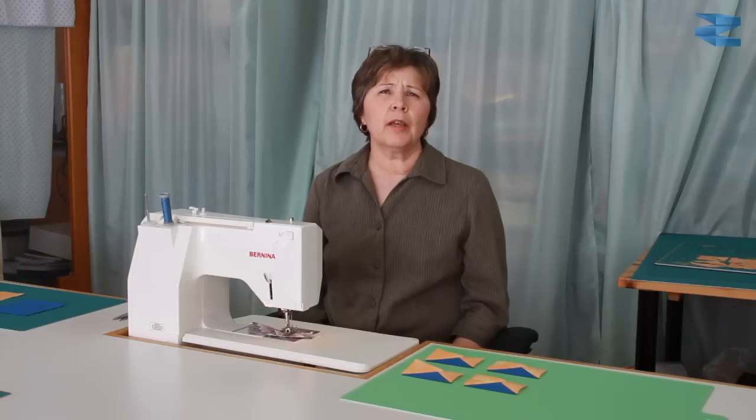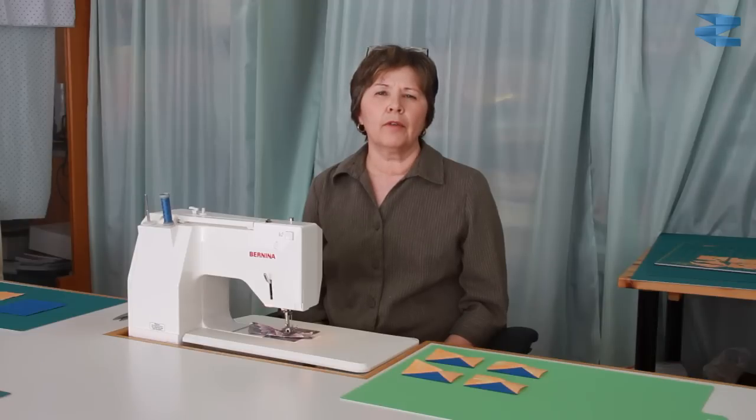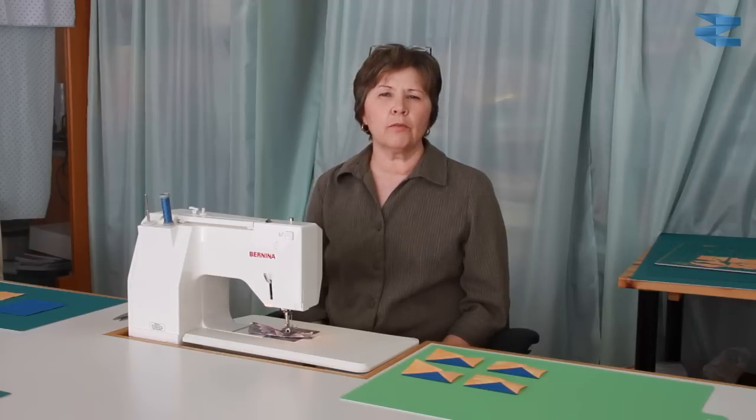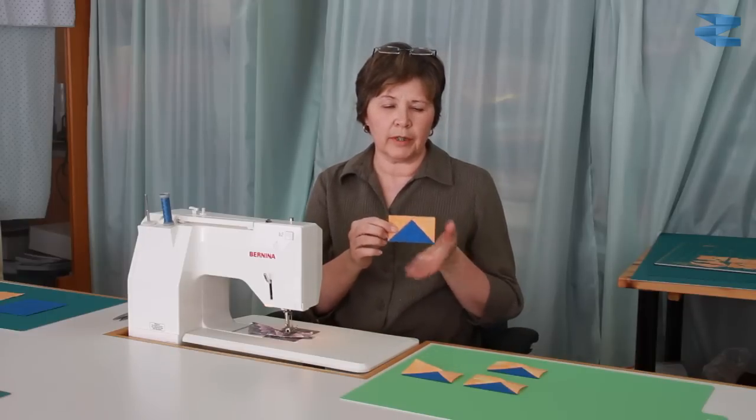When you piece your flying geese, do you get perfect rectangles? If your flying geese are askew like mine used to be, my trim down method that I'm going to show you will help you accurately piece 4 flying geese that have a finished width that is twice the finished height. For example, the flying geese I'm making are finished 3 inches wide by 1.5 inches high with quarter inch seam allowances.